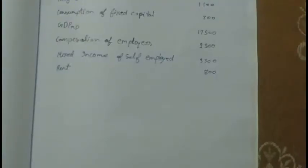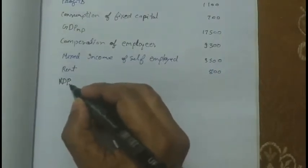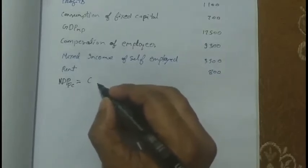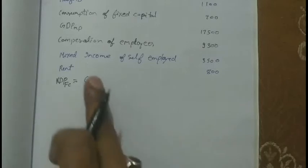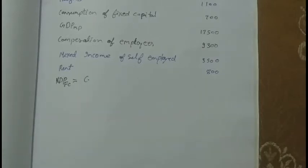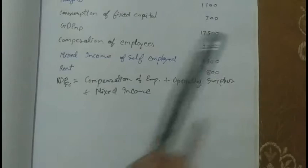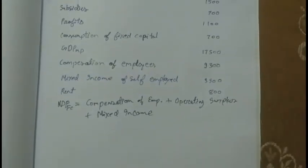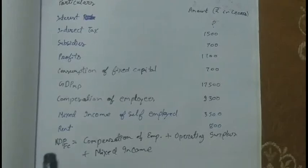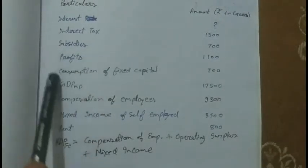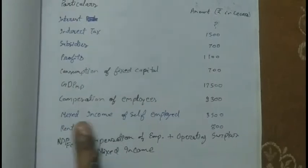So first, what is the formula of the domestic income method? NDPFC equals compensation of employees plus operating surplus plus mixed income. Mixed income is given. Now, compensation of employees is 9300. Operating surplus is not given directly, so we have to add its components: rent, interest, and profit. Profit is given, so we use that. Mixed income is also given as 3500.